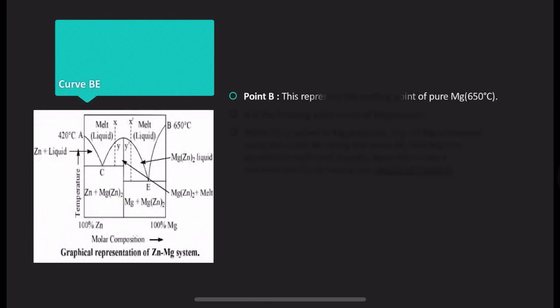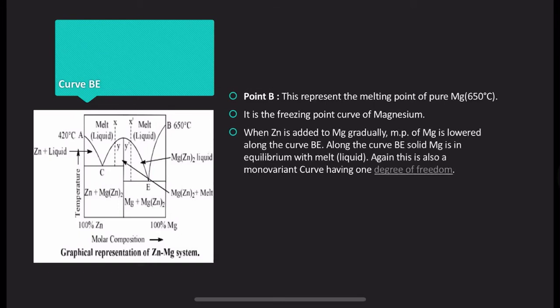Curve BE at point B represents the melting point of pure Mg at 650°C. It is the freezing point curve of magnesium, also called the melting curve of magnesium. When Zn is added to Mg gradually, the melting point of Mg is lowered along curve BE, and along this curve solid Mg is in equilibrium with melt. This is also a monovariant curve with a degree of freedom of 1.